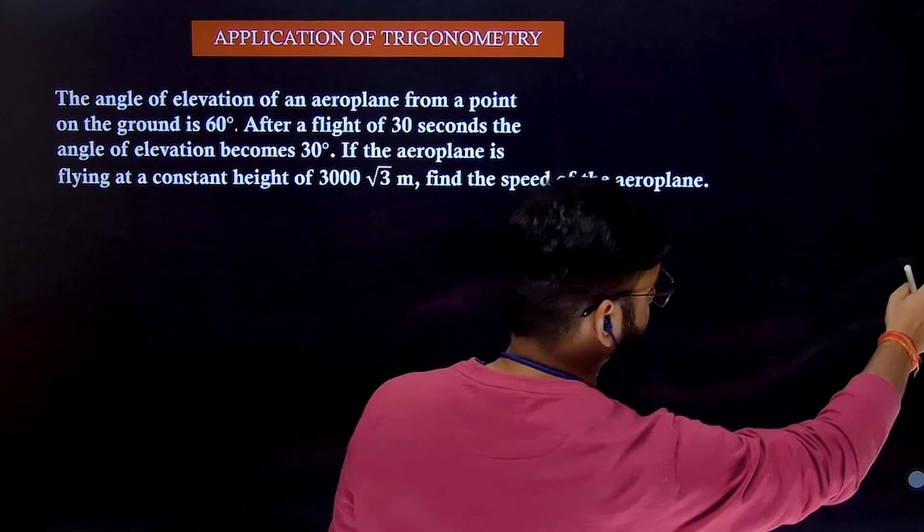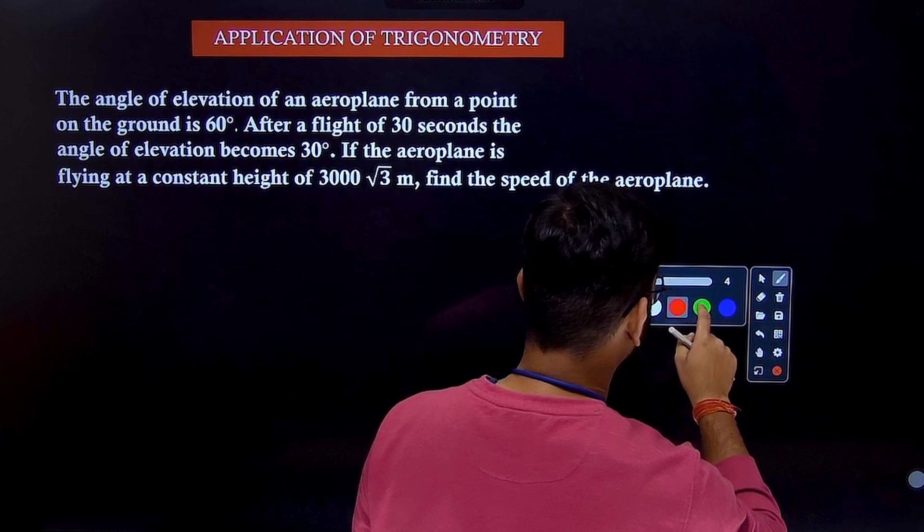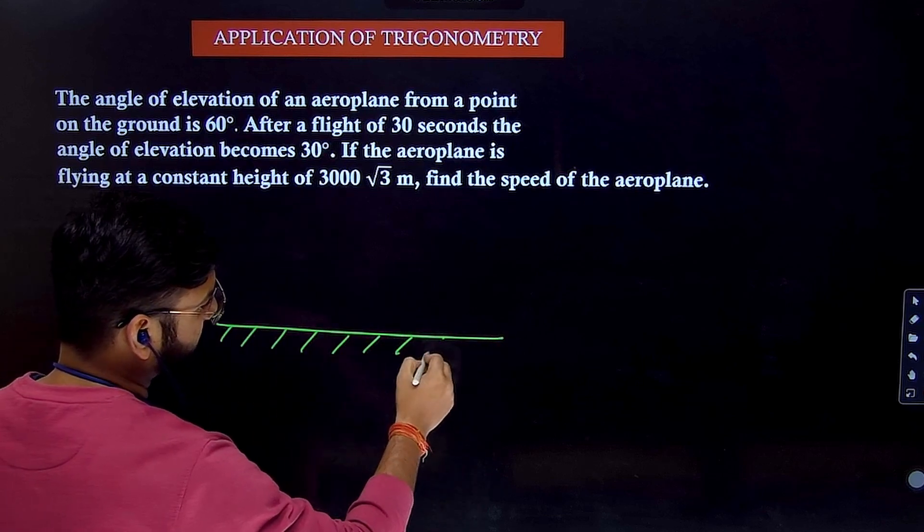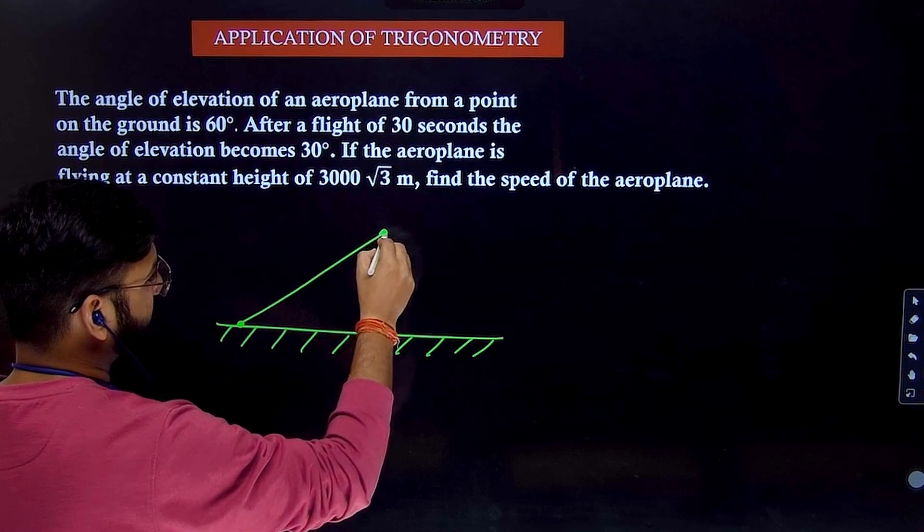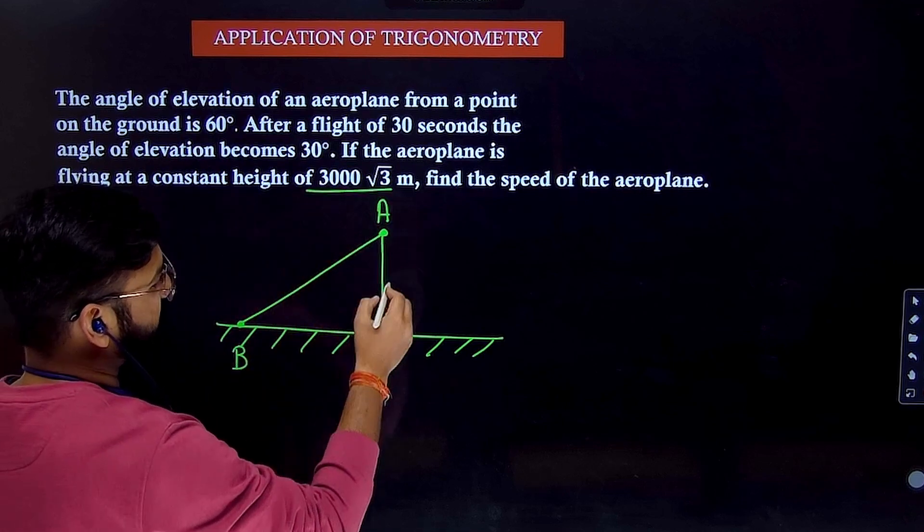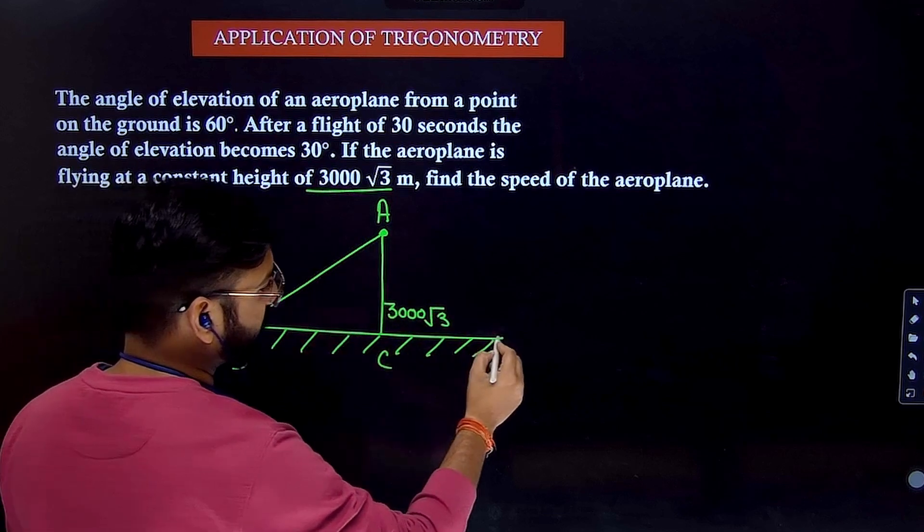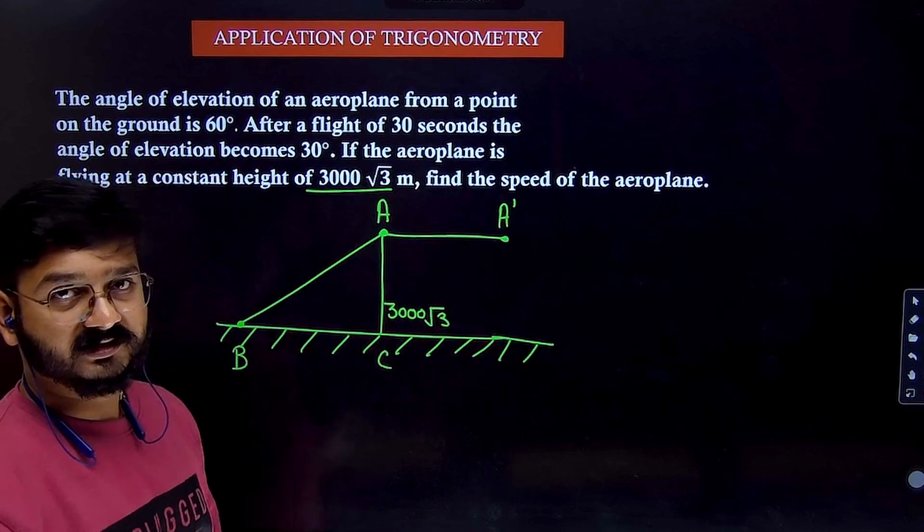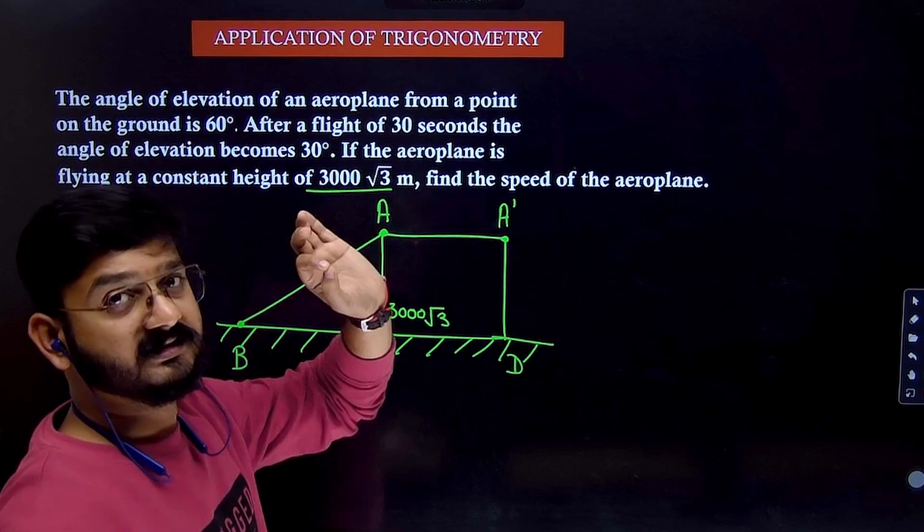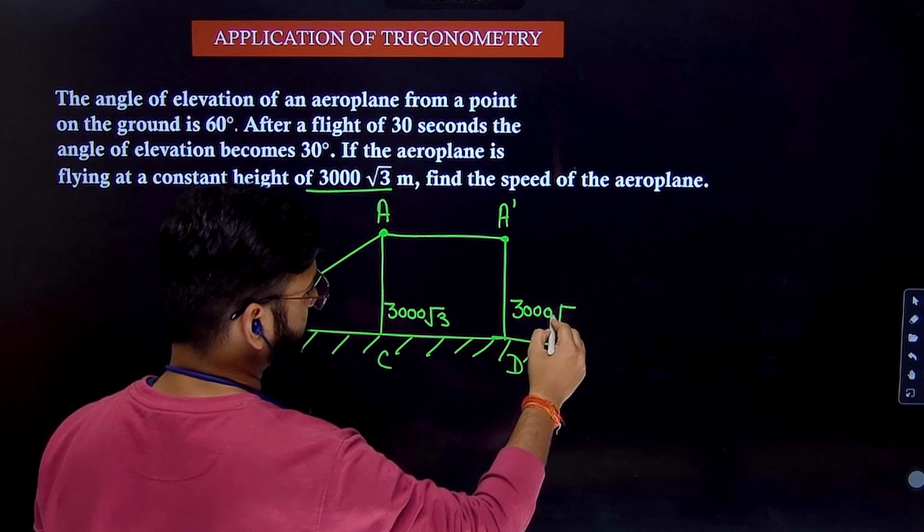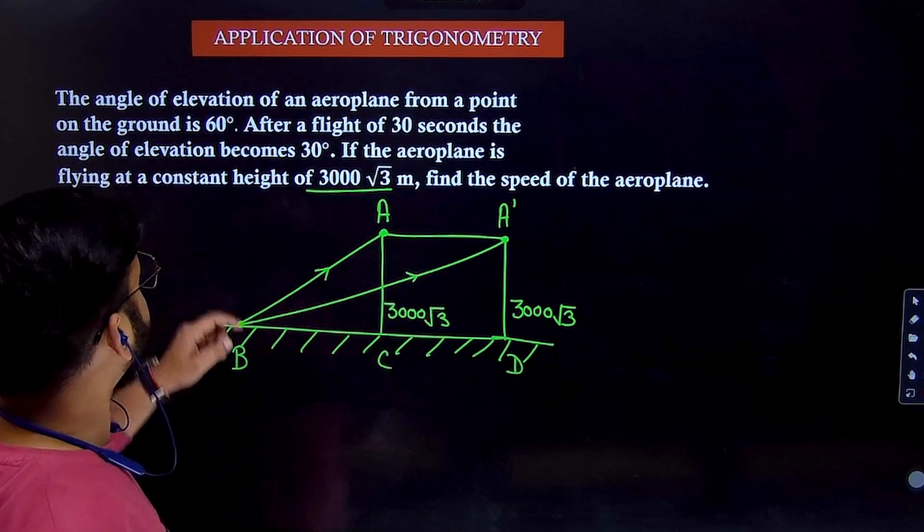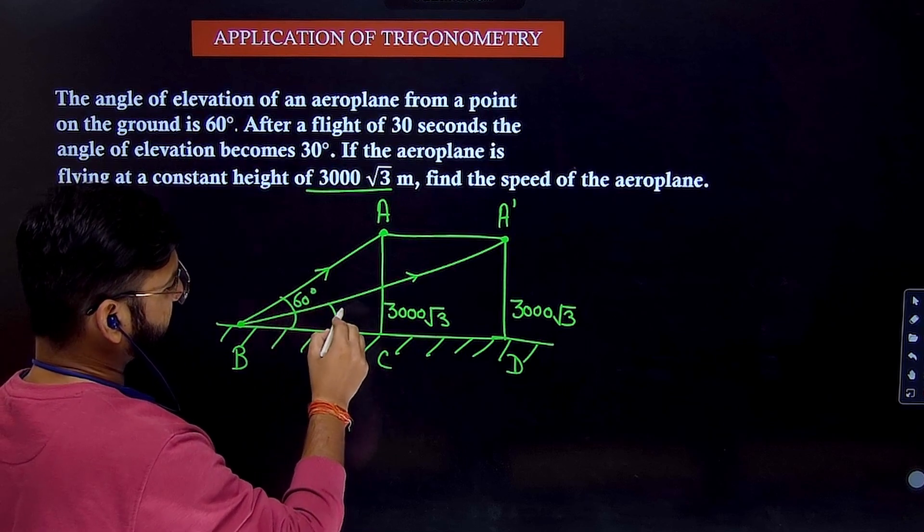So we are observing the plane. Let's draw the figure quickly. So from a point on the ground, you're observing the plane. Suppose the plane is here at a point A, and the point of observation is B. You can make this point as C. So plane is basically flying at a height of 3000 root 3. Now the plane moves ahead. Now the plane is at a new point. Let's assume that it is A dash. Mark this point as D. So A dash D will be also same as 3000 root 3 because the plane is flying horizontally at the same height.